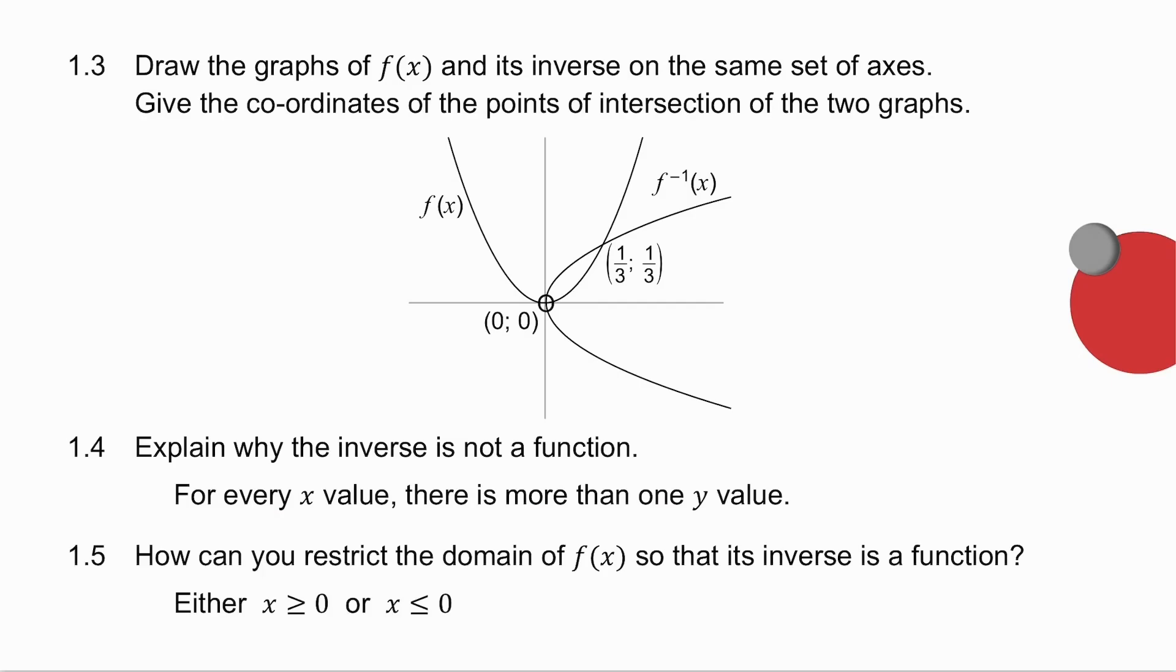Now, 1.5 asks you, how can you restrict the domain of f of x? f of x is your original parabola. So how can you restrict the domain? In other words, what part of the parabola do you need so that the inverse is a function? Now, what's causing a problem with the inverse being a function? Well, the problem is that as I get past the turning point, I'm getting extra y values. So there's where my problem is.